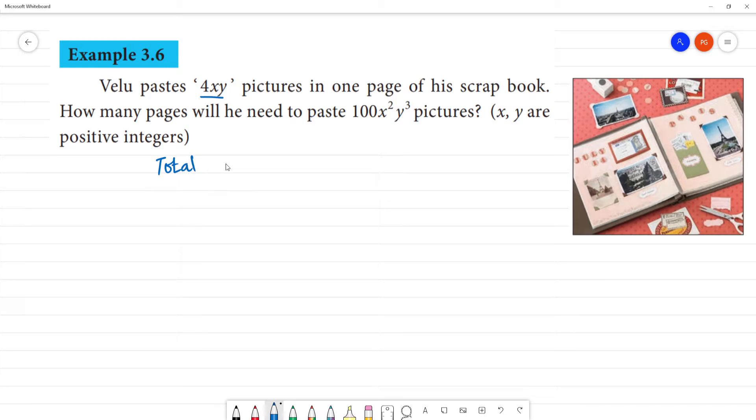Total pictures is equal to 100x²y³ pictures. Total is 100 pictures. In one page we can paste 10 pictures in one page. How many pages does he need? 100 divided by 10 is 10. He needs 10 pages.